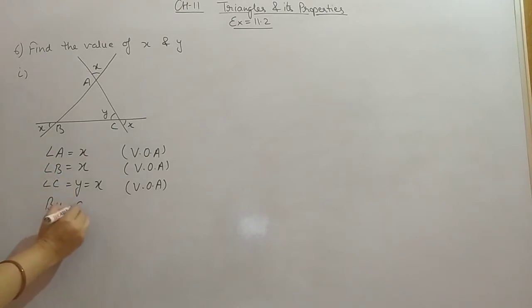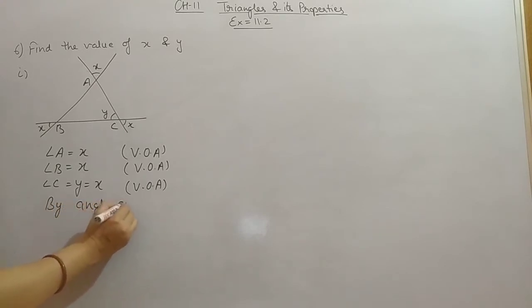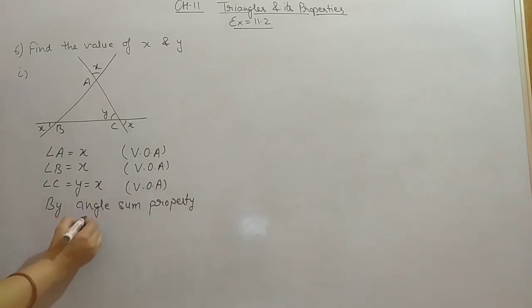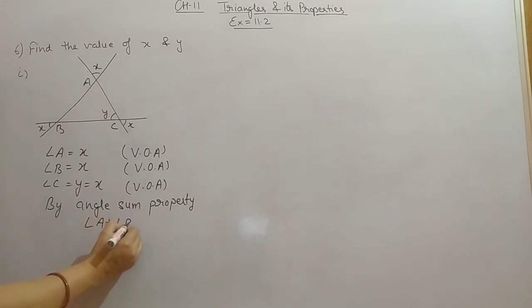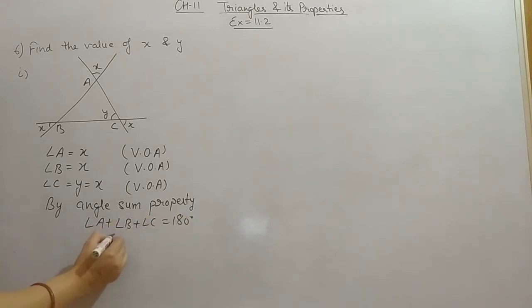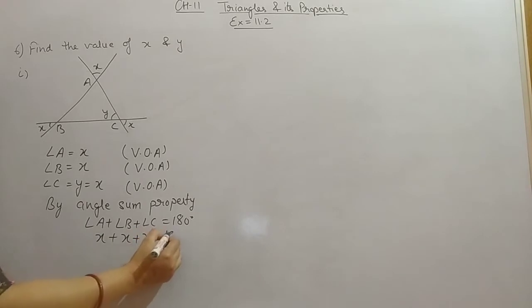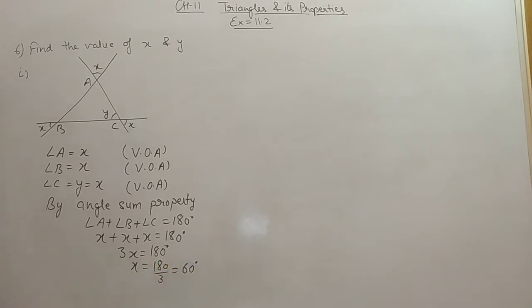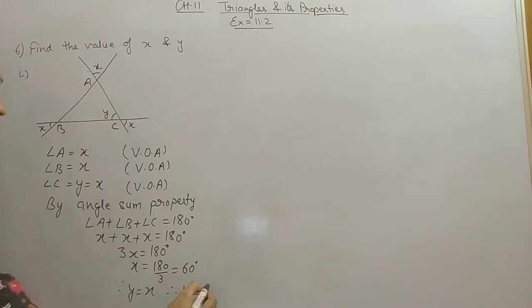By angle sum property, angle A plus B plus C equals 180 degrees. So all three angles are X, giving us 3X equals 180. Shifting 3 to the other side gives division, so X equals 60 degrees. And since Y and X are equal, Y is also equal to 60 degrees.